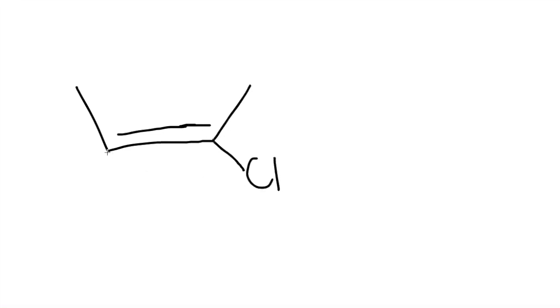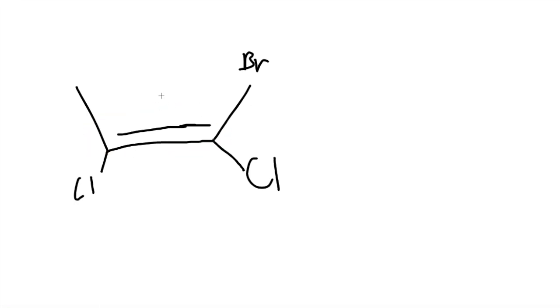We have this next problem. First we look at where the double bond is — it's right here. Let me split it in half and look at each side separately. On the left side we're comparing chlorine to a CH3. Chlorine is bigger than carbon, so this side gets selected.